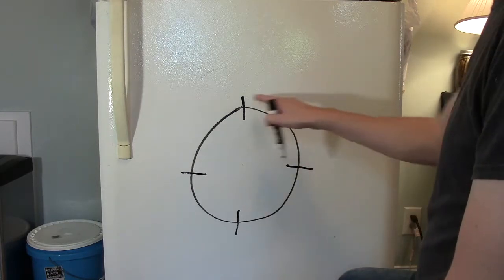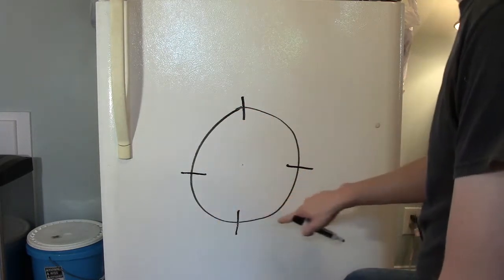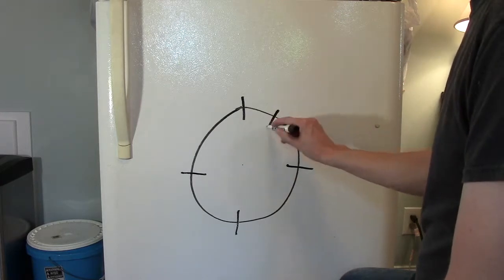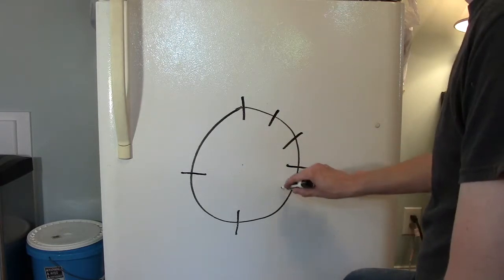And now we have four quadrants. One, two, three, and four. Each quadrant will need two more tick marks.